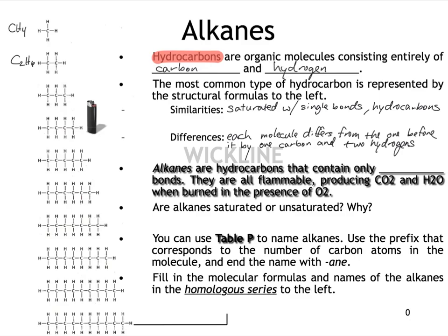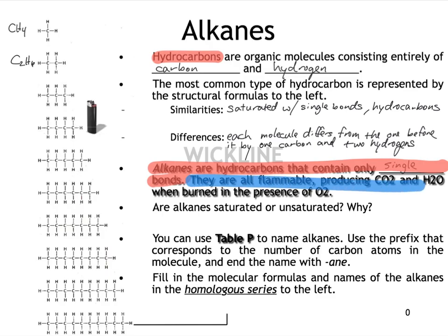So now we can define alkanes. Alkanes are hydrocarbons that contain only single bonds, and furthermore, they are all flammable, and they all produce CO2 and water when they're burned in the presence of oxygen. So I'll highlight that in blue, because that's important as well. So are alkanes considered saturated or unsaturated? Well, I already told you earlier that they're saturated, and that's because they have all single bonds.